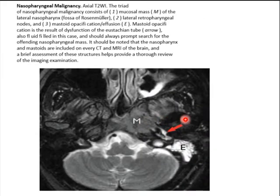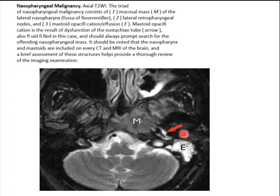Regarding nasopharyngeal malignancies, another image shows a mass at the fossa of Rosenmüller involving the mucosal space, resulting in complete opacification of the mastoid air cells with some lymph nodes present. These are characteristic findings of a malignant nasopharyngeal neoplasm.